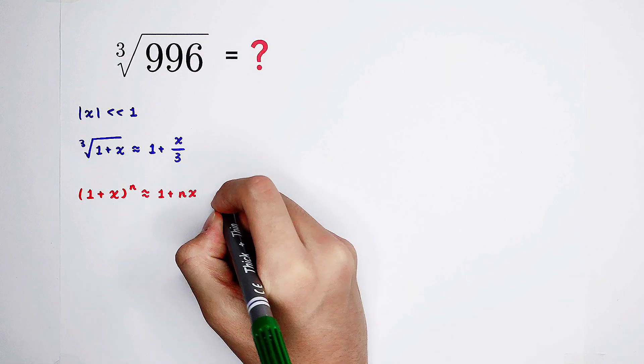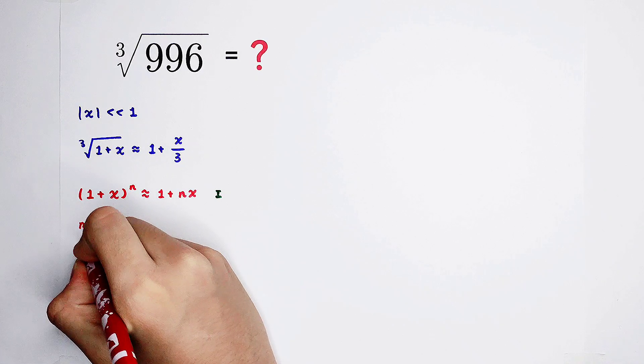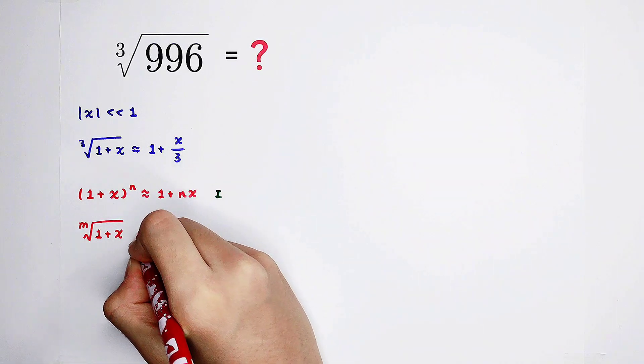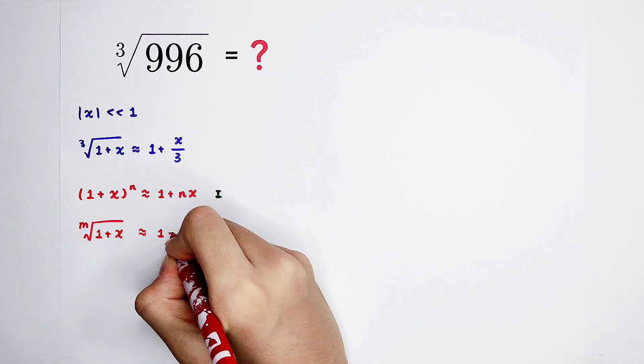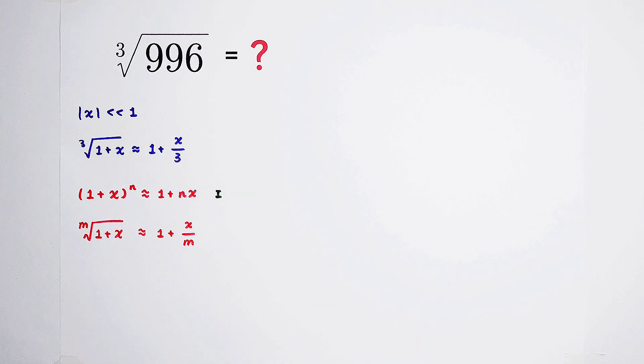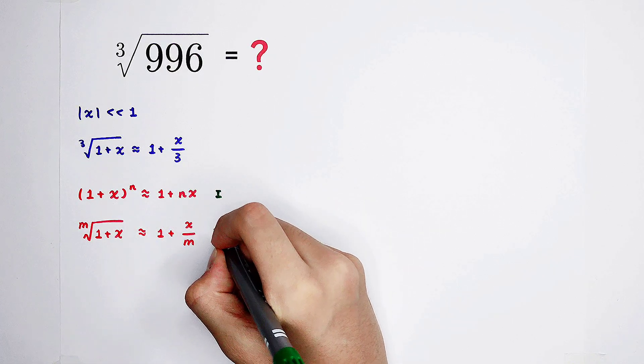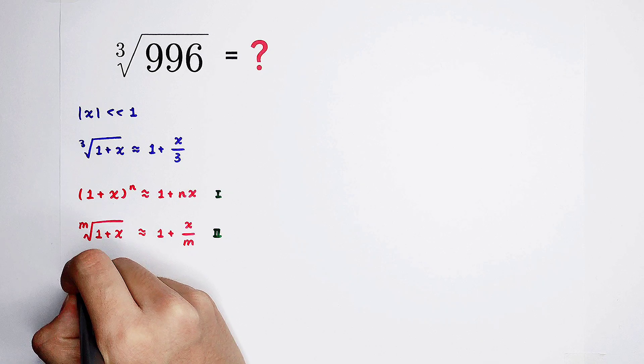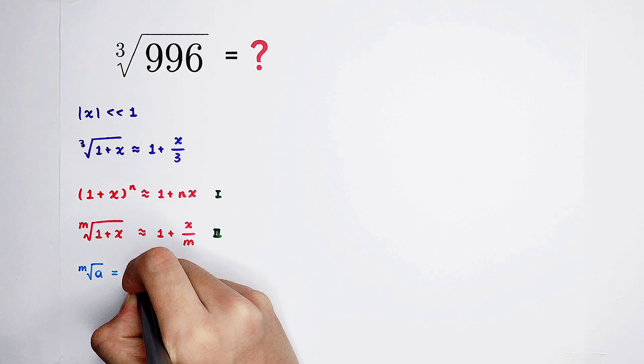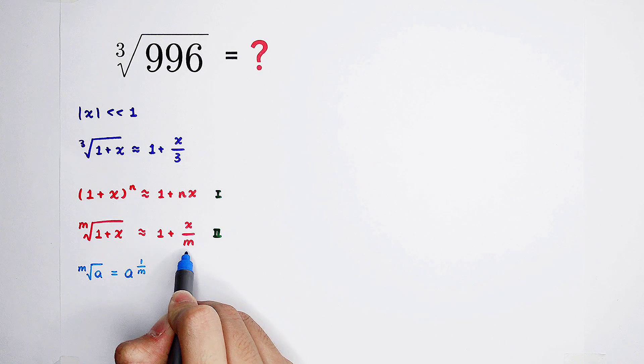This is the first form. There is also a second form. The nth root of 1 plus x will be approximately equal to 1 plus x over n. Why? Actually, we can get the second form from the first form. Because the nth root of a is always equal to a to the power of 1 over n. So, in this case, n is equal to 1 over n.